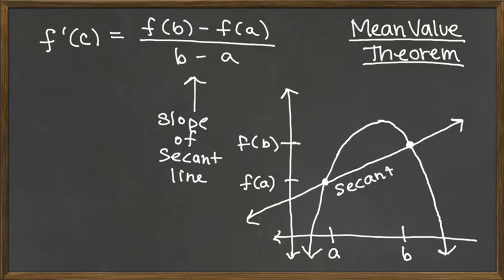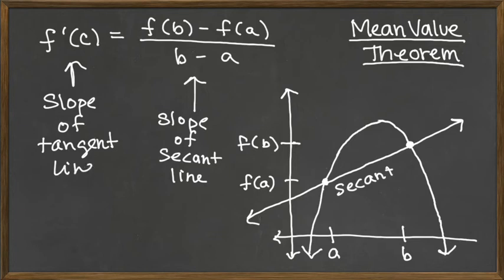When we're thinking derivative, we're also thinking slope. And so instead of thinking slope of the secant line, we're thinking slope of the tangent line. Well, what tangent line? How do I know? Where's my c?